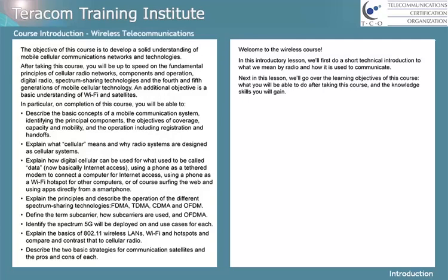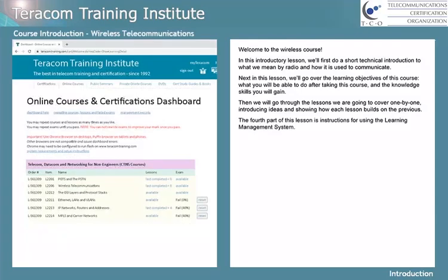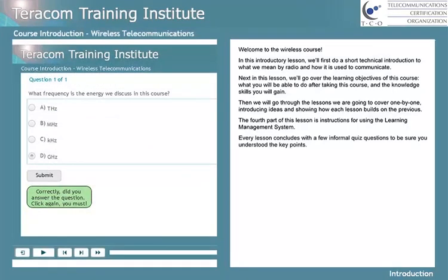Next, in this lesson, we'll go over the learning objectives of this course, what you'll be able to do after taking this course, and the knowledge and skills you'll gain. Then we'll go through the lessons we're going to cover one by one, introducing ideas and showing how each lesson builds on the previous. The fourth part of this lesson is instructions for using the learning management system. Every lesson concludes with a few informal quiz questions to be sure you understood the key points.